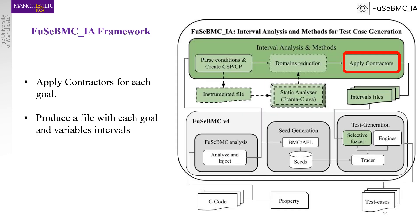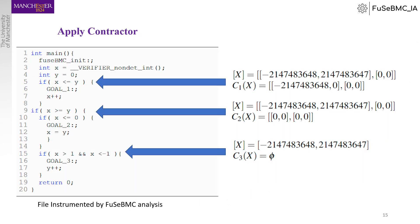With all the components of a constraint satisfaction problem in hand, we move to the next stage. We apply the contractors at each goal and then produce a file detailing each goal along with its intervals. Here is an example of applying each contractor and the result. In the first contractor, the upper bound of the interval for variable X was reduced to 0. The second reduced both the upper and lower bound of the interval of X to 0. Finally, the third produced an empty set, which means that the goal is unreachable.